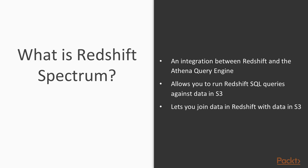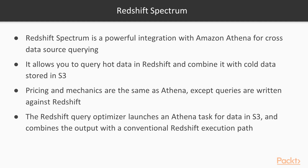Next we have Redshift Spectrum, which is actually an integration between Redshift and the Athena query engine rather than a standalone technology. Redshift Spectrum allows you to run Redshift SQL queries against data in S3 and then join that data with data you already have in Redshift. So Redshift Spectrum really is just a powerful integration with Amazon Athena for cross-data-source querying — it allows you to query your hot data in Redshift and then combine it with cold data stored in S3.